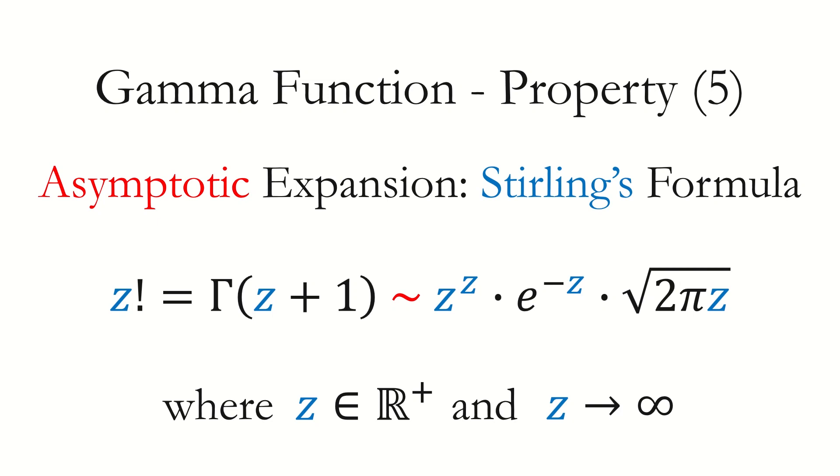Hello, let's continue the special function series. Today we will work on the asymptotic behavior of gamma function. And finally, we will derive the Stirling's formula.